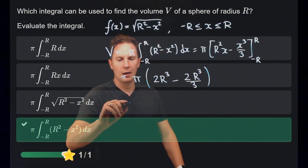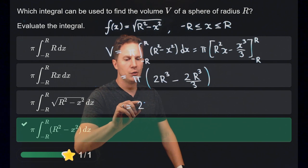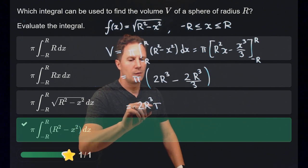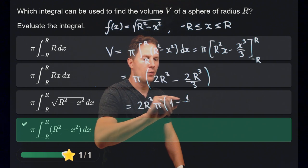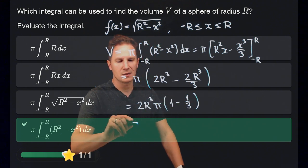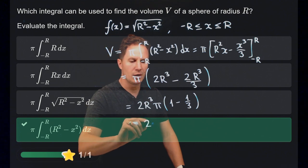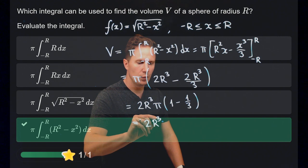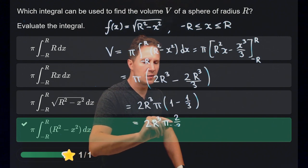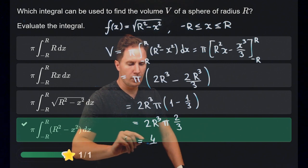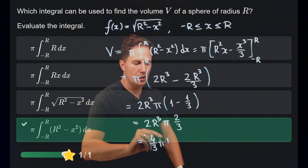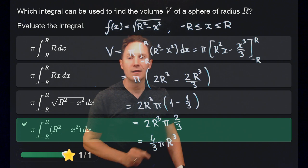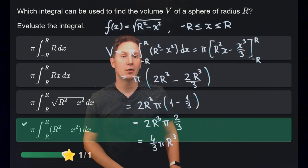So we may factor out 2r cubed pi to get 1 minus 1 third in the parentheses, that's like 2 thirds, so therefore we have 2 times r cubed times pi times 2 thirds or 4 thirds pi r cubed, and that is expected as this is the volume of a sphere of radius r.